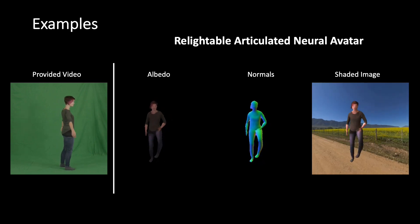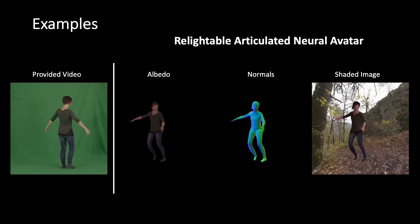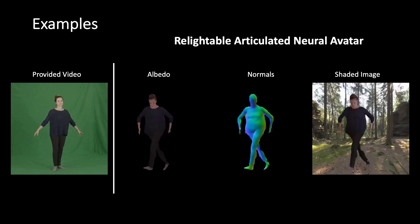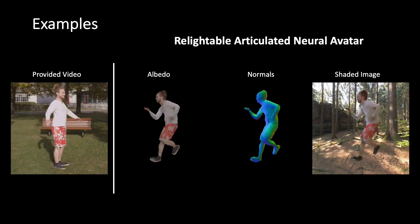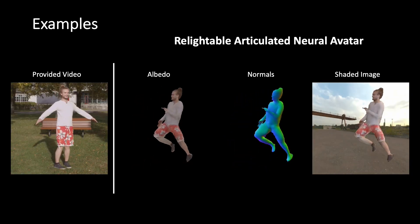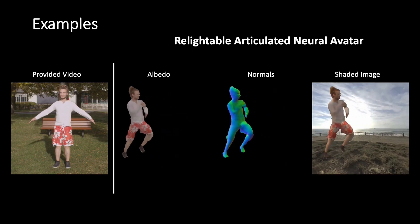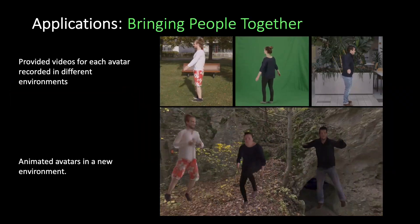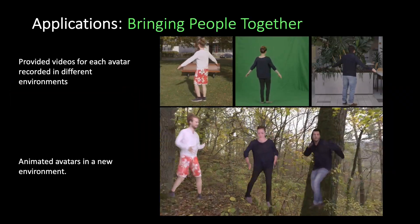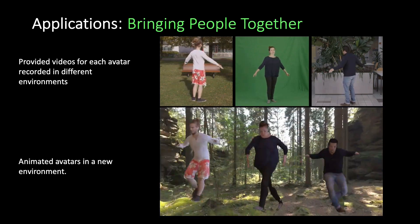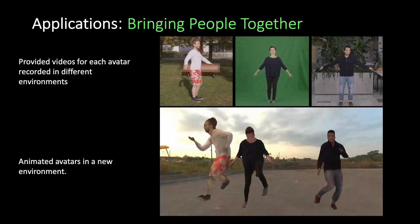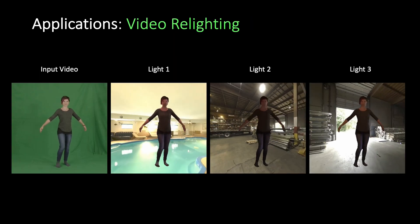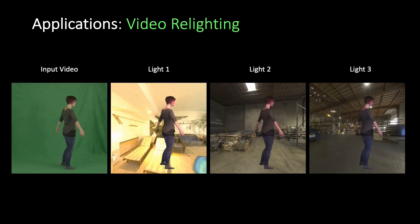Here we also show the refined albedo texture and normals. For example, we can animate avatars created in different environments into a single novel environment with consistent lighting. We can also use RANA for relighting monocular videos.